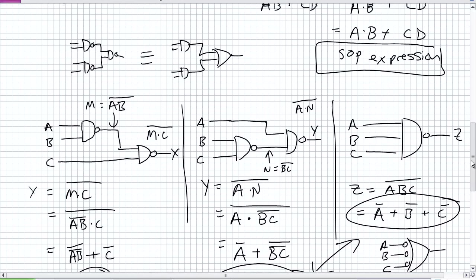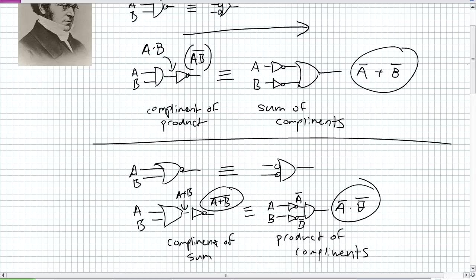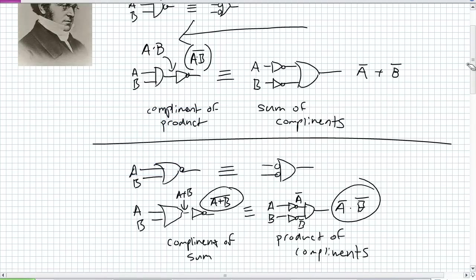What's neat about De Morgan's Theorem that a lot of people don't mention is that it works in both directions. The complement of the product equals the sum of the complements — basically, if I've got a NAND gate I can always break it down. But what if I came up with the expression NOT A OR NOT B and didn't have any inverters or OR gates? Go backwards — just grab a NAND gate. So it helps to know these things forward and backward.